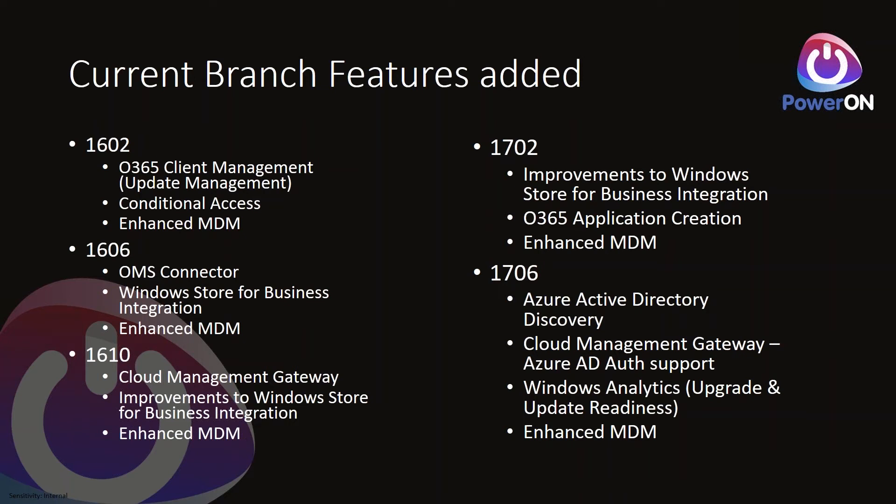Version 1702 brought even more Windows Store for Business integration — we can see license counts and deployed counts. We also got another Office 365 improvement: rather than manually building the application, there's now a wizard in the Config Manager console where you specify which components and licensing you want, and Config Manager creates the XML, downloads the content, and stages it as an application ready for deployment.